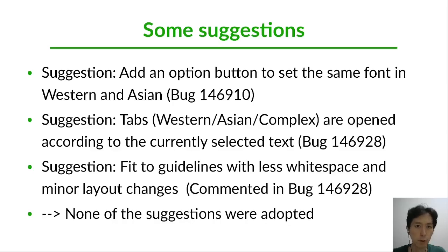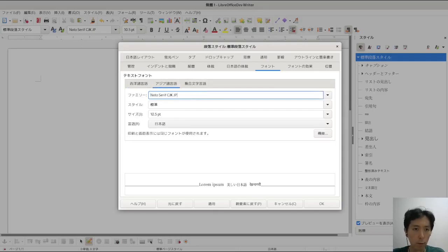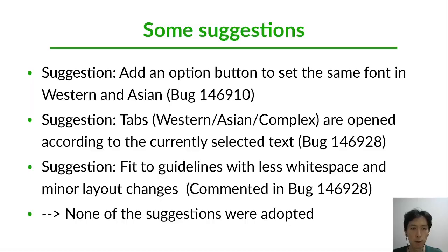After some suggestions, one case was to add an option button so that Western and Asian fonts use the same font setting — a checkbox button. If you want Western and Asian language to have the same font settings, checking the checkbox switches to the same font setting. Another suggestion was that the tab for Western, Asian, or Complex opens according to the currently selected text.